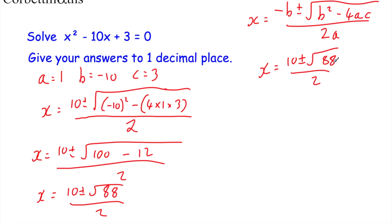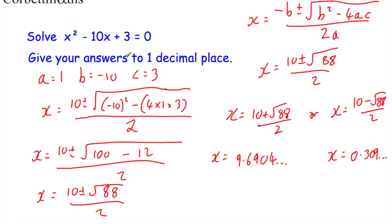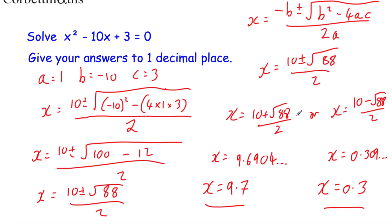Give your answers to one decimal place. We've got two answers: x equals 10 plus the square root of 88 divided by 2, or x equals 10 minus the square root of 88 divided by 2. Working these out: x equals 9.6904... or x equals 0.309... Rounded to one decimal place, that means x equals 9.7 or x equals 0.3. So there are two solutions: x equals 9.7 and x equals 0.3.